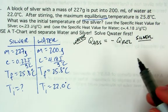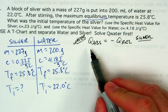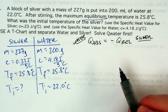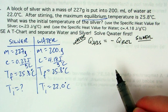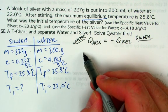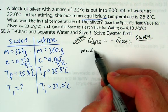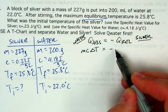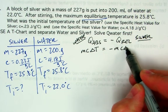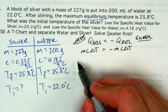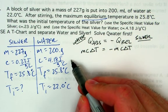Since we didn't measure q directly, we're going to substitute in our heat formula. We know that q equals mc delta T. So in place of q on the absorbing side, I'll substitute mc delta T, and on the releasing side, negative mc delta T, bringing the negative sign down.